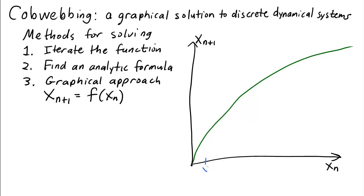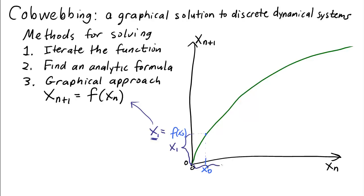Imagine we start with initial condition x_0 somewhere on the horizontal axis. The height of the graph of the function above x_0 gives us f(x_0), which by our equation equals x_1. To calculate x_2, we need to take x_1 and put it back into the function as the new input — put x_1 on the horizontal axis. Assuming the origin is where x_n = 0 and x_{n+1} = 0, the distance x_1 on the vertical axis must be transferred to the same distance on the horizontal axis.